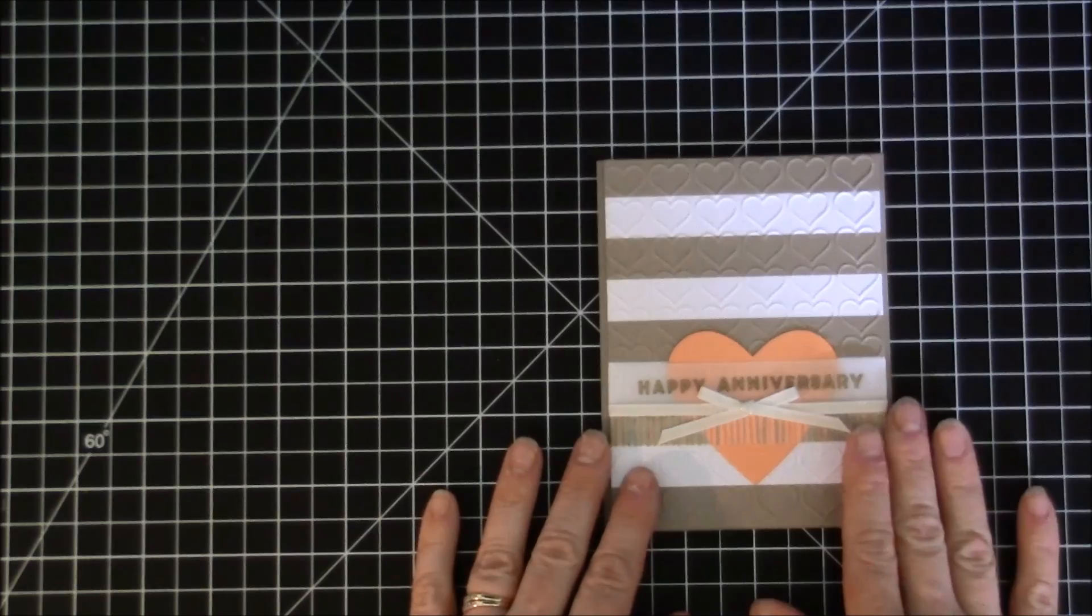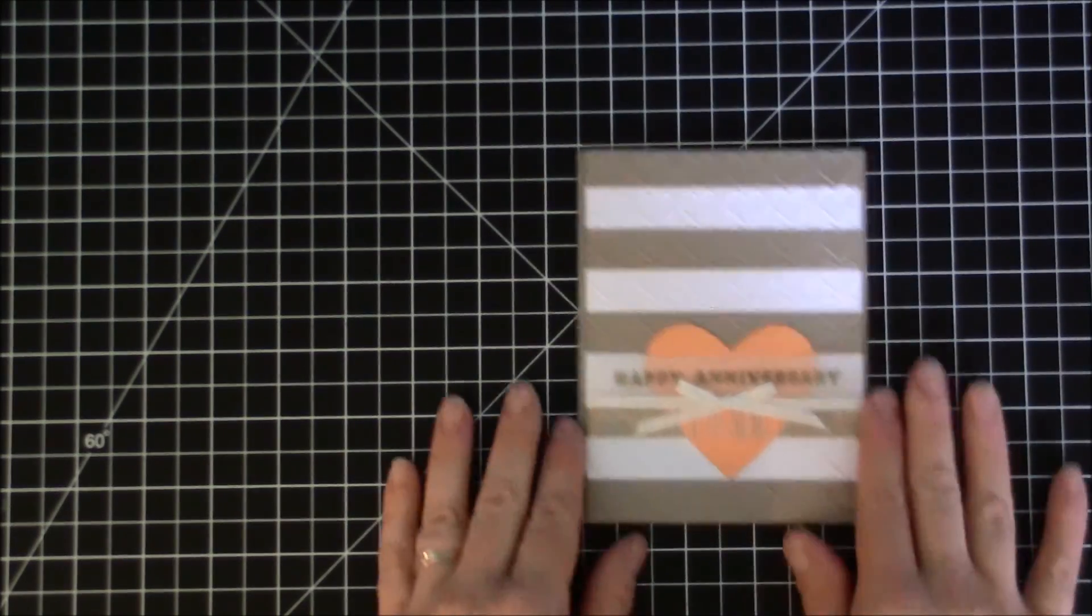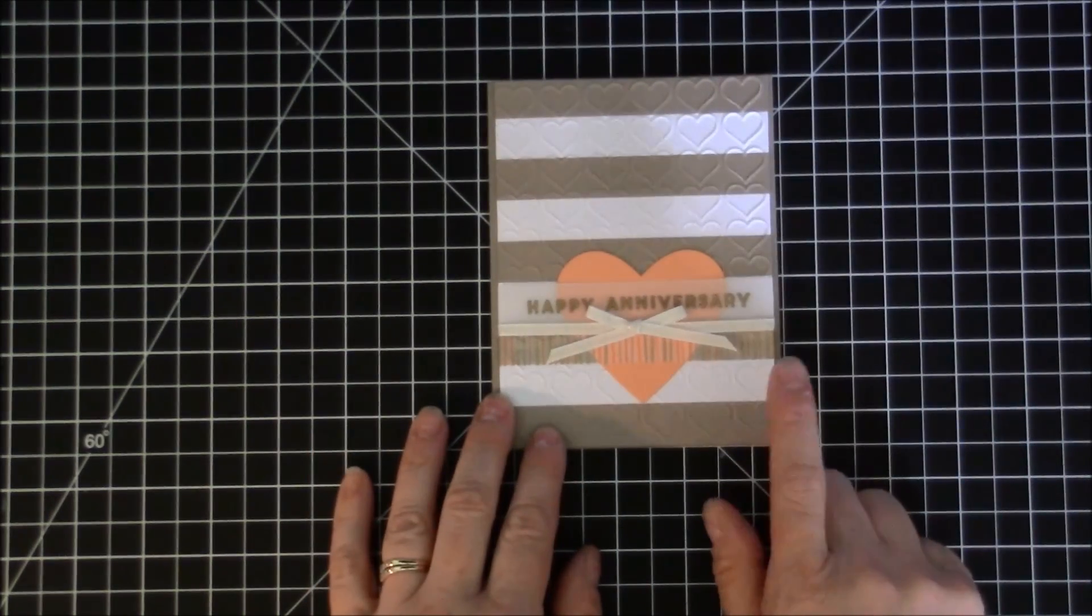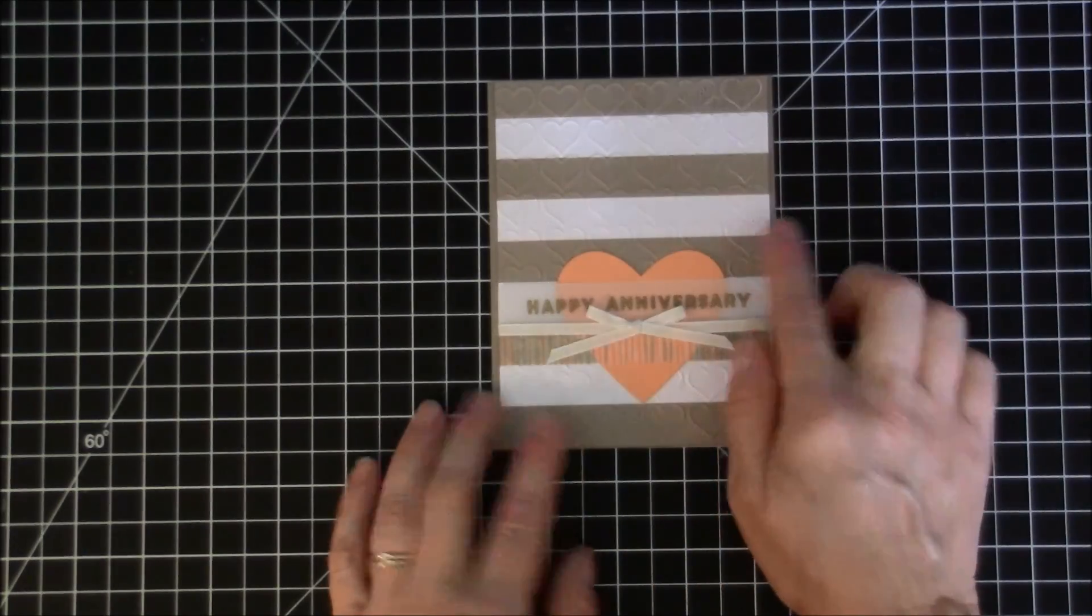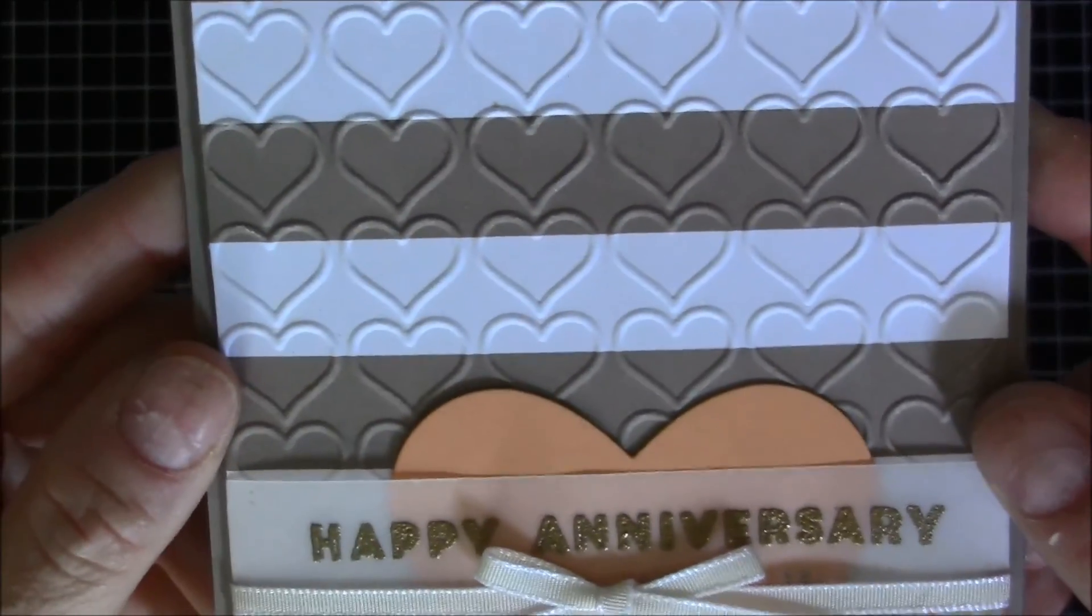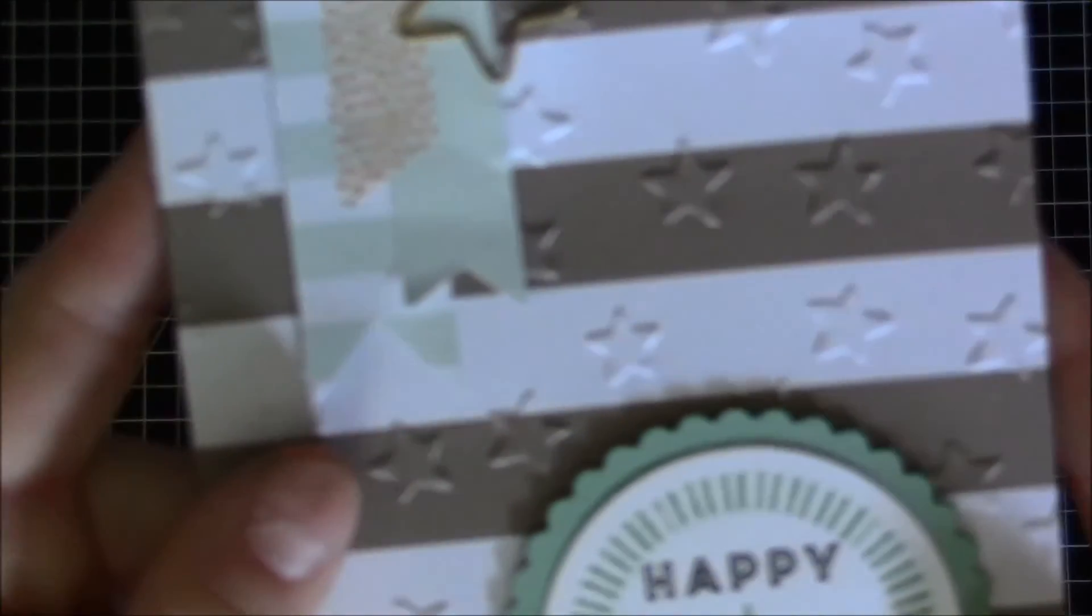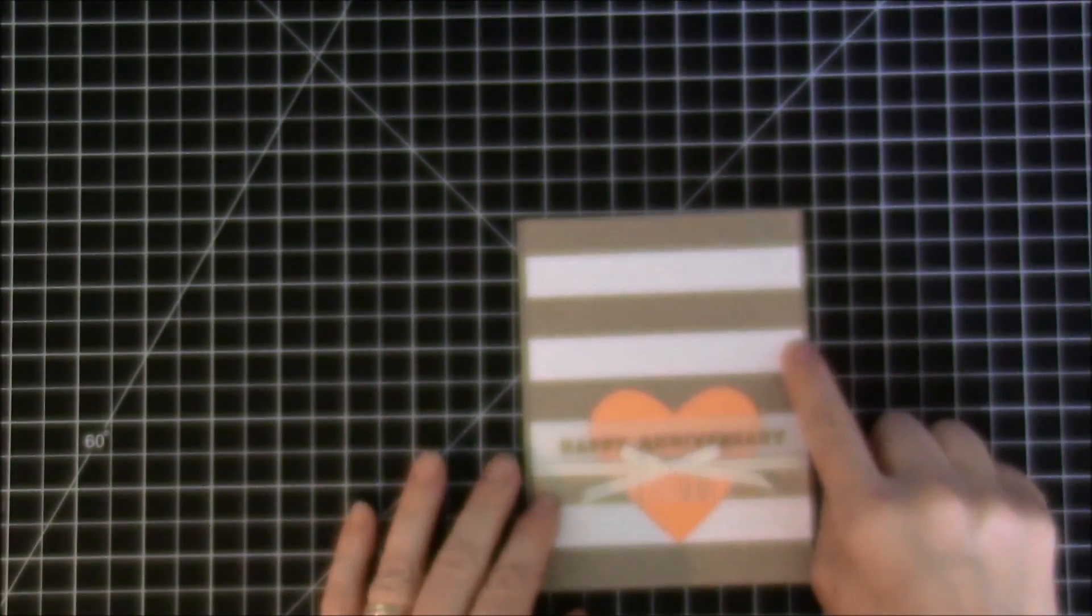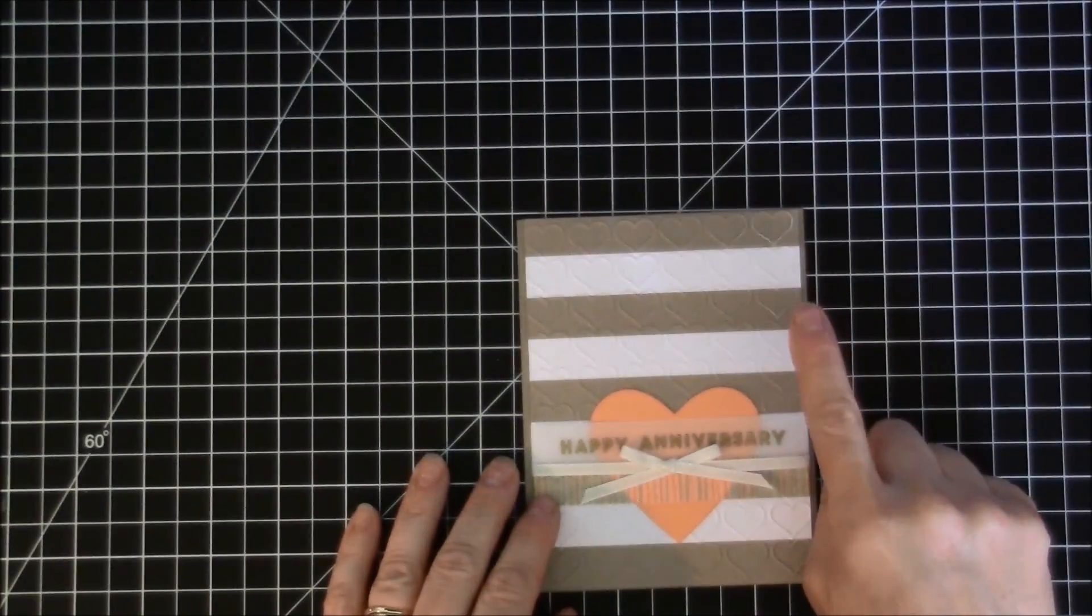And then my last card I tried to do something a little bit different. I just used a panel of that striped card and I embossed it with the heart. I don't know if you can see it, like I should hold up here so you can see it, the heart embossing folder. Let me just show you this one real quick with the stars, you could see what the stars look like. But this one I did the hearts.